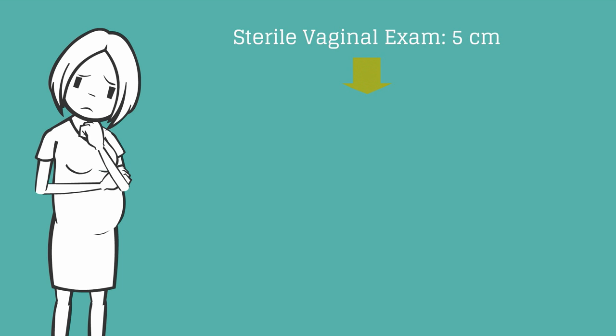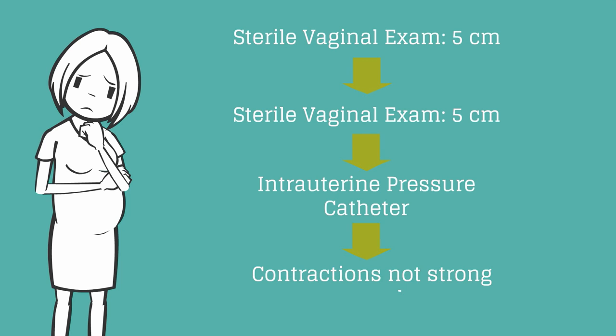Let's get back to Labora. Remember that she was admitted at 5 cm dilated in active labor. At the time of a repeat sterile vaginal examination, she was still 5 cm dilated and we placed an intrauterine pressure catheter and this demonstrated that her contractions were not strong enough.